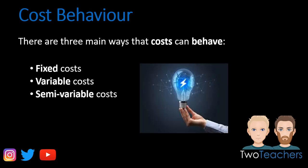Electricity is a good example of a semi-variable cost because the cost for electricity is split into two parts. You have the variable rate, which is the price you pay per unit of electricity, and then you also have the standing charge, which you pay regardless of usage. Therefore, a semi-variable cost such as electricity has both a fixed element and a variable element to it.